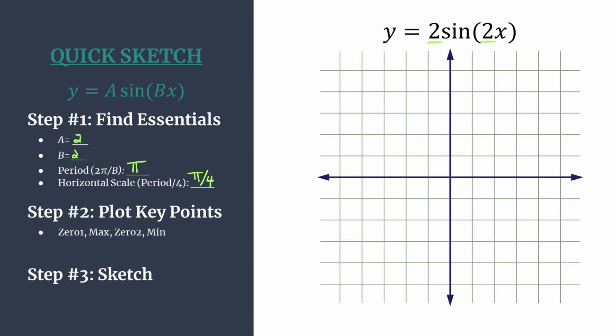Let's go ahead and label our horizontal axis for one cycle. Moving to the right of the origin, our first tick mark is π over 4, then 2π over 4, which simplifies to π over 2, then 3π over 4, and then 4π over 4, or π. That fourth tick mark to the right of the origin should always match your period when you set it up like this.